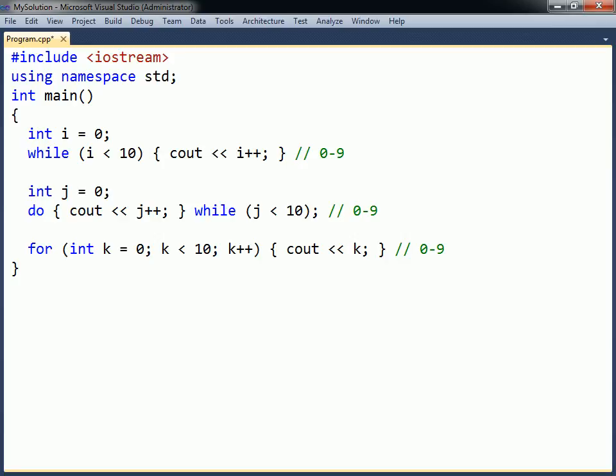The for loop has several variations. For starters, the first and third parameters can be split into several statements by using the comma operator.